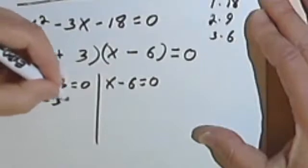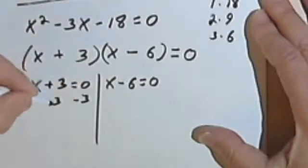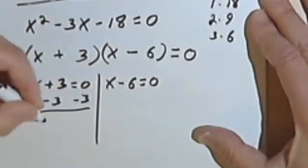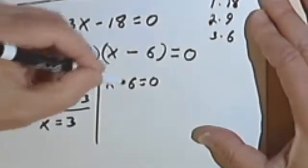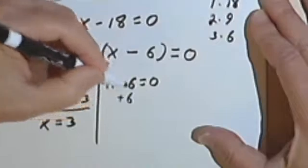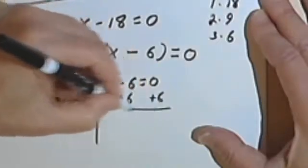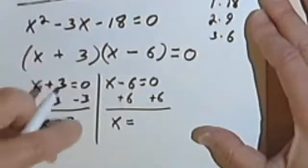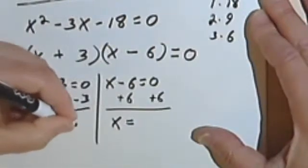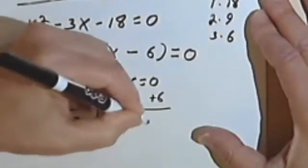So these are pretty easy to solve. I just subtract 3 from both sides of this first one, and I'm going to get x equals 3. Solving the second one, I add 6 to both sides, and I get x equals... I'm sorry, x equals negative 3, and x equals 6.